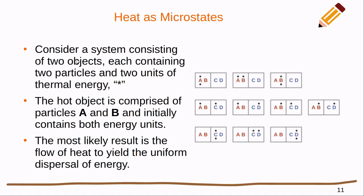We can apply the same sort of idea to heat as a microstate. If we consider a system consisting of 2 objects, each containing 2 particles and 2 units of thermal energy, I have 2 boxes here, there are 2 particles, and initially all the thermal energy is just on A. I can have all of these different microstates as to where that thermal energy winds up going. In the end, what winds up happening is the most number of microstates involves having those heat little particles, the little thermal energy units, being distributed evenly on either side of the 2 boxes.